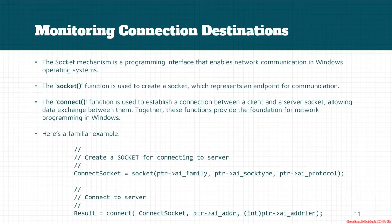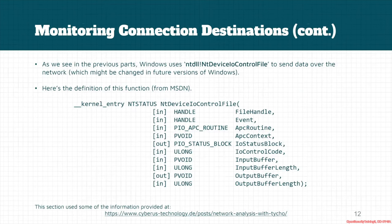Here is familiar source code for creating socket connections. As we saw in previous parts, Windows uses NtDeviceIoControlFile to send data over the network, and we concluded that it's system call number 7. However, this may change in future versions of Windows, so it's better to check before using related commands.